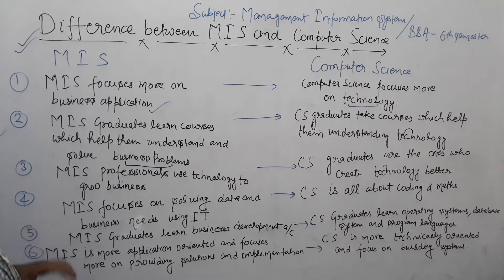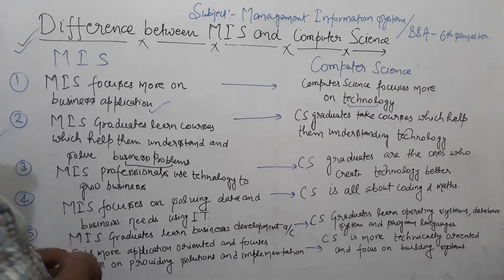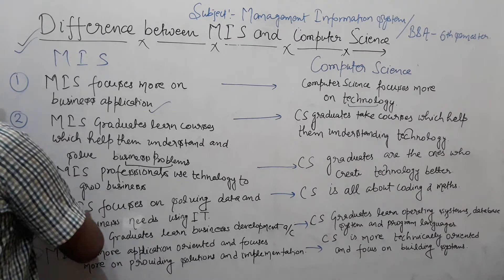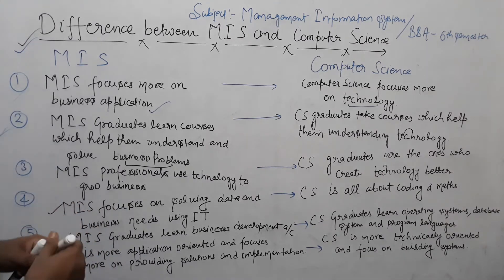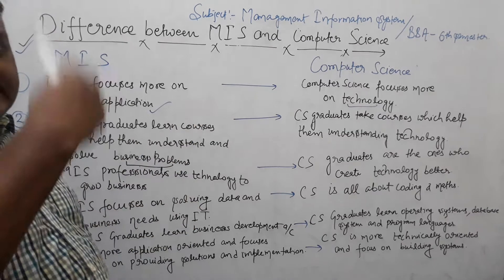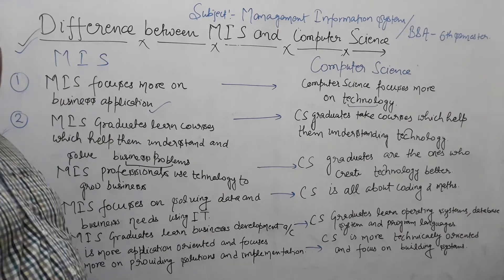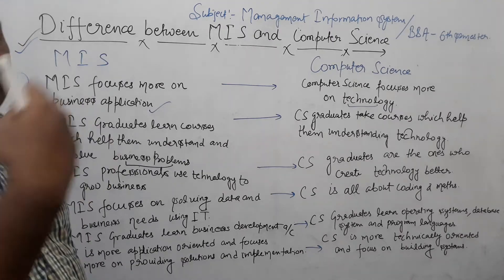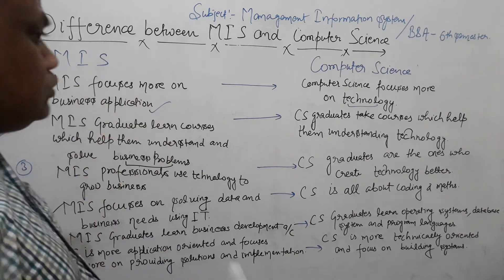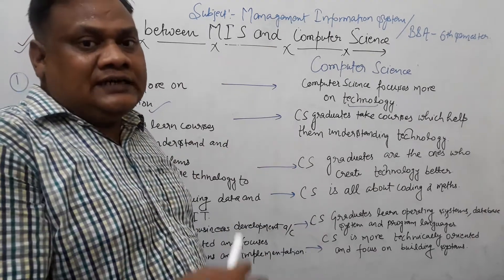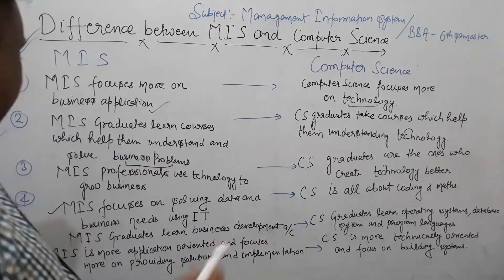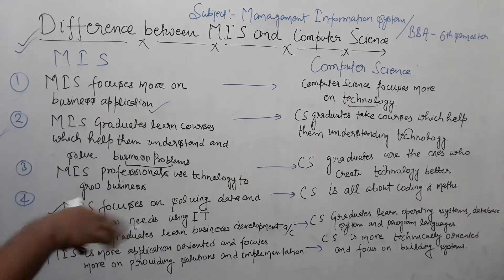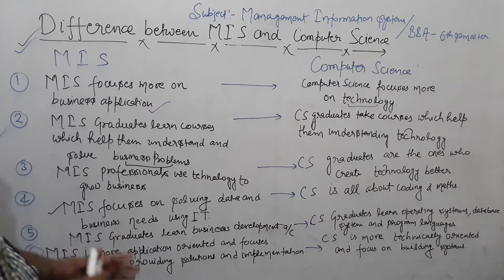MIS focuses on solving data problems — businesses are built using IT. The most important thing is that MIS uses IT. We analyze data and convert it into information. We use tools, techniques, and software to analyze data and make it more efficient using IT.